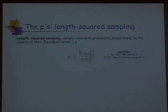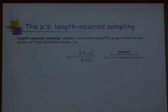The question is: what are good choices for sampling probabilities? About 15 years ago, a proposal appeared in a paper by Alan Frieze, Ravi Kannan, and Santosh Vempala, and then in another paper the next year that I was also involved in, to use the so-called length-squared sampling. You sample rows of the matrix with probability proportional to the square of their Euclidean norms, biasing towards rows with larger entries.